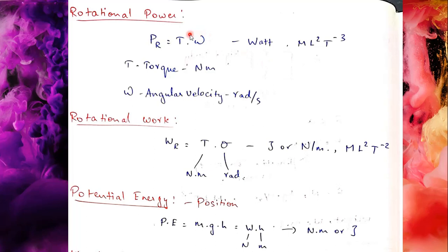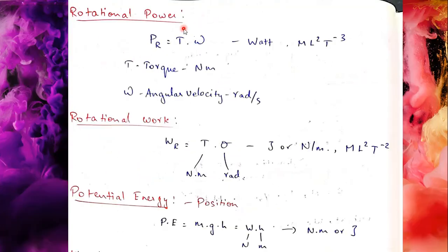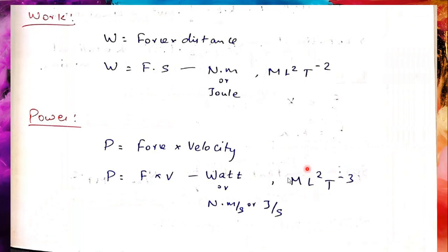Next is translational power and rotational power. For rotational power, the unit is also watt. Torque is in newton⋅meter per unit, and angular velocity omega is in radian per second. Cross-multiplying gives newton⋅meter per second, that is watt or joule per second. The dimensional formula is ML²T⁻³. Units and dimensions are the same as linear power.